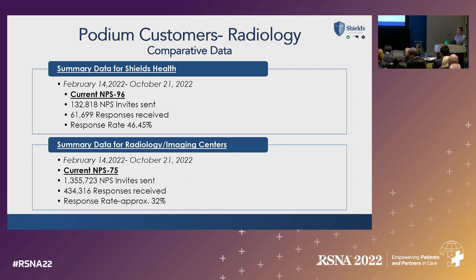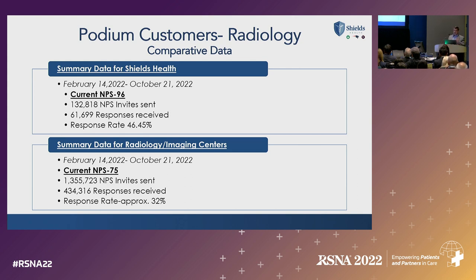We've been using this platform since February of this year. We've got 61,000 responses across our product lines, and our net promoter score is 96. It can range from negative 100 to positive 100 — you take the people that love you, subtract the people that don't, and end up with a number. We're doing okay at 96.